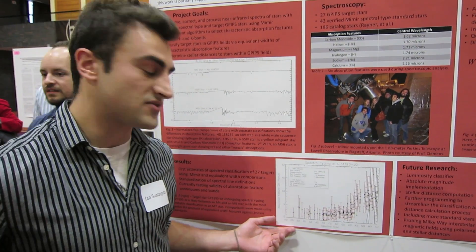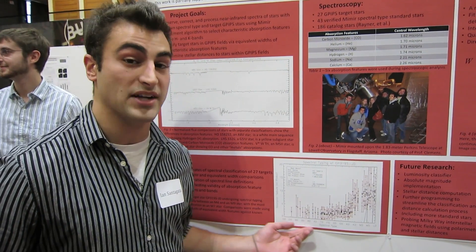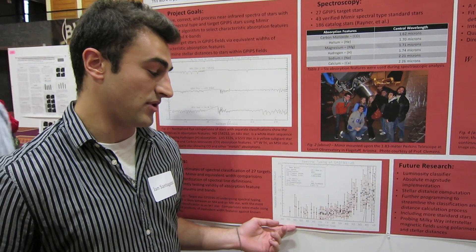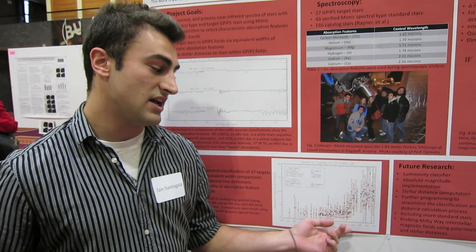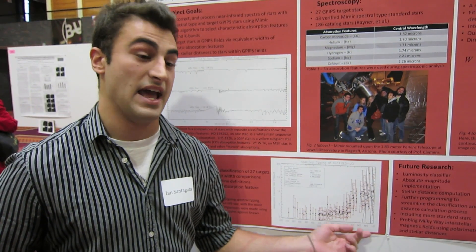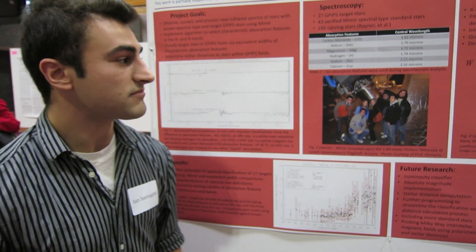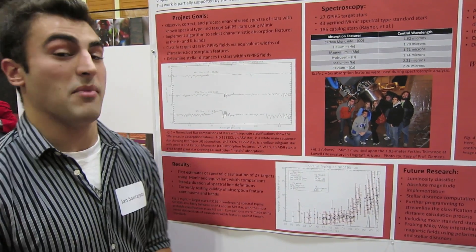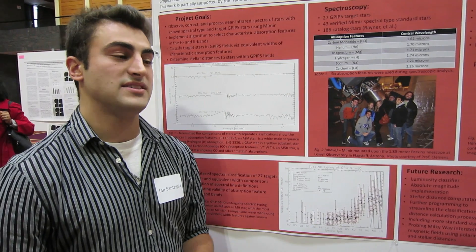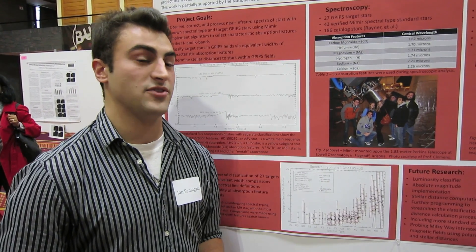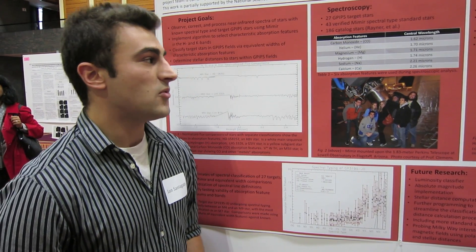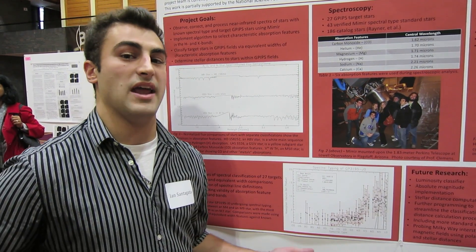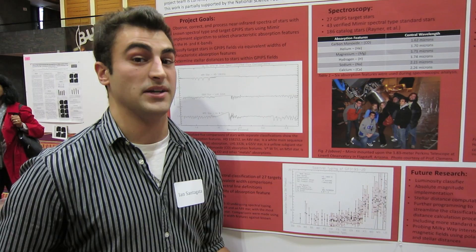The sequence of stars goes from hot to cold, starting with O, B, A, F, G, going to K and M, being the coldest. My study dedicated itself to finding the distance. How do we do that? We use infrared and spectroscopy.